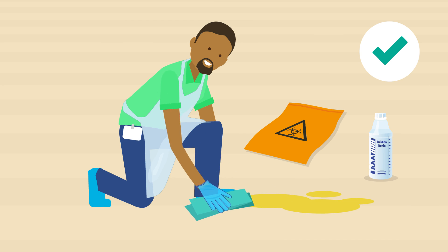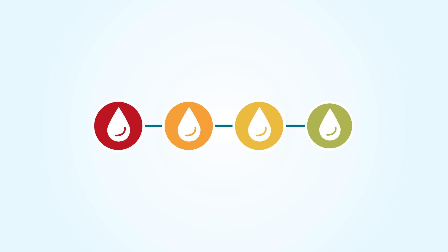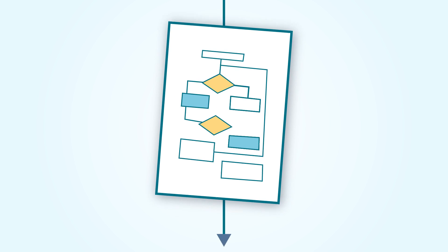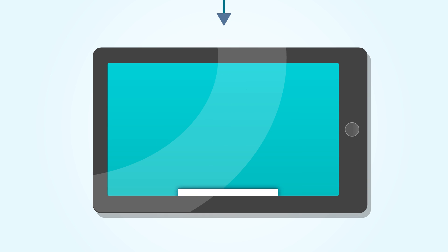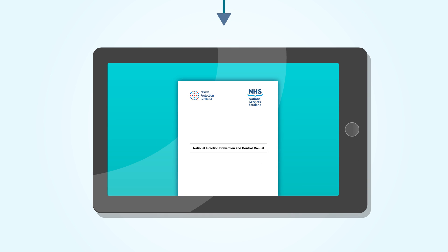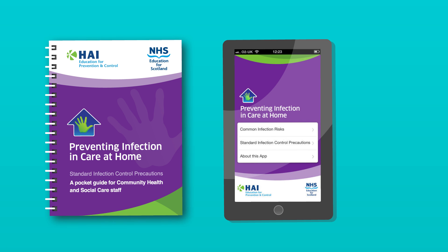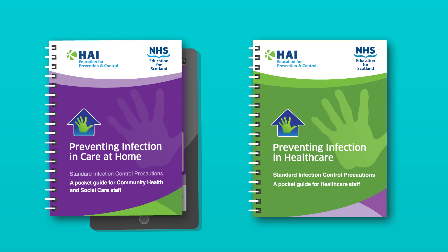For further practical guidance on dealing with blood and bodily fluid spillages, including the algorithm, download the NHS Scotland National Infection Prevention and Control Manual here. Download or order hard copies of the following booklets for more information on how to manage blood and body fluid spillages.